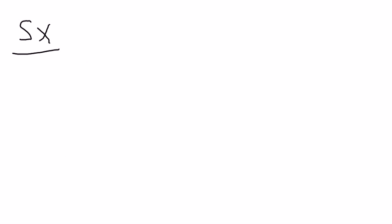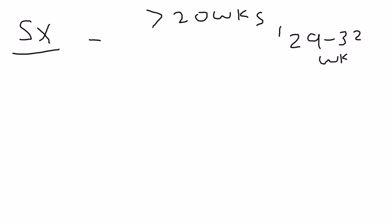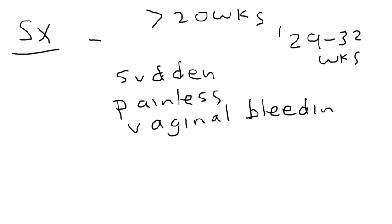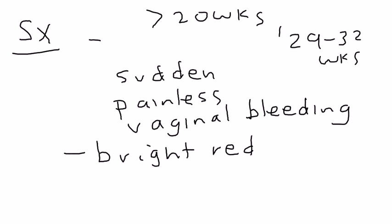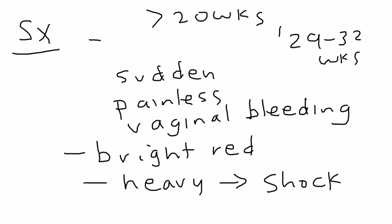Now let's get into the symptoms. How does a woman present with placenta previa? It's almost always after 20 weeks of gestation, with the average being about 29 to 32 weeks. The presentation is sudden painless vaginal bleeding — what's really significant is that it will be bright red, and it may be so heavy that it can lead to hemorrhagic shock. Sometimes uterine contractions may also accompany the bleeding.